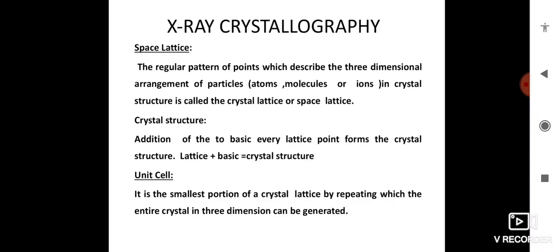Next one is basis. Basis in a crystal is that identical units of groups of atoms, molecules needed to associate with every lattice point for forming the crystal structure. That is crystal structure: addition to the every basic lattice forms the crystal structure. That is lattice plus basis equals crystal structure.